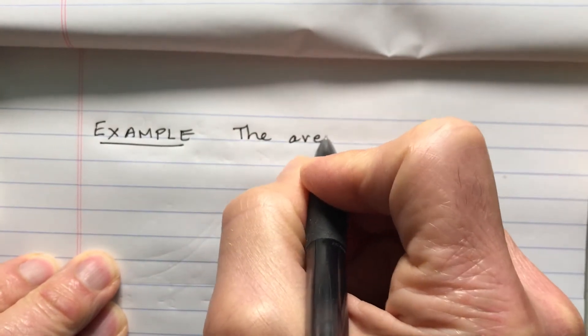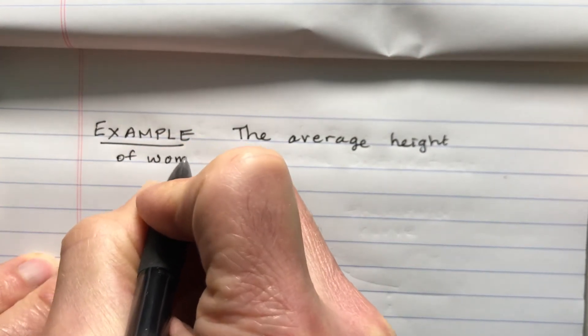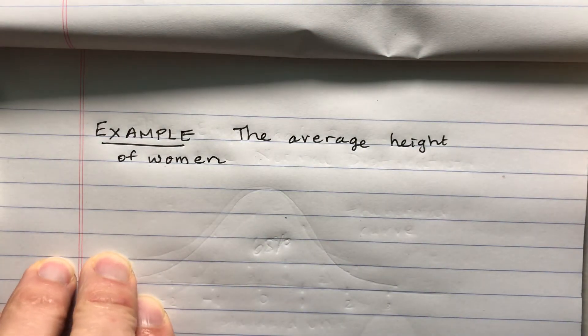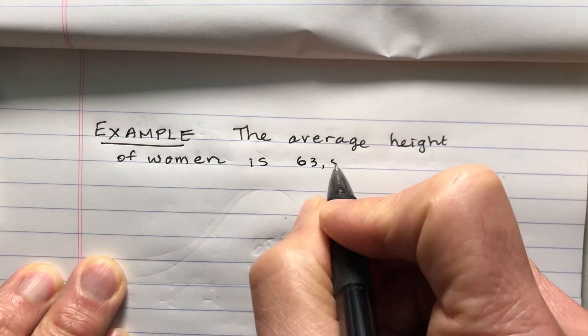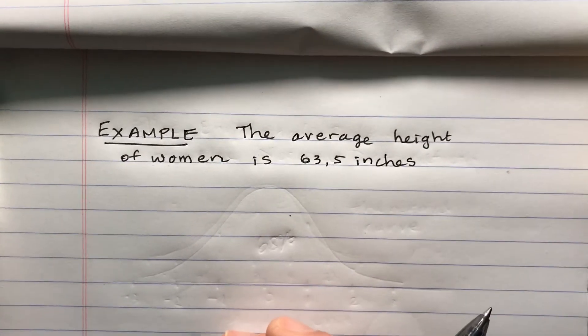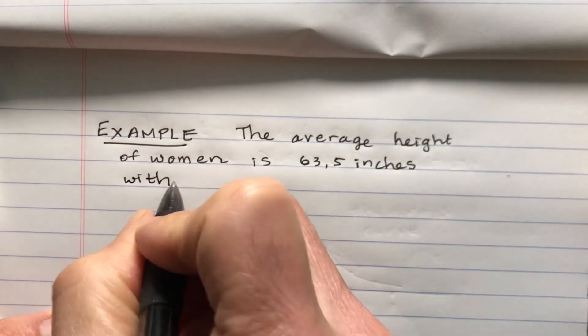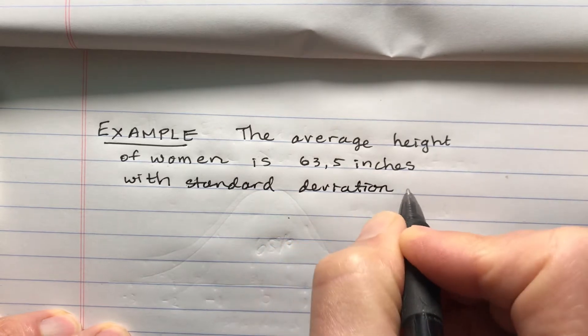We're going to look at an example, which is the average height of women. The average height is 63.5 inches with a standard deviation of 3 inches.